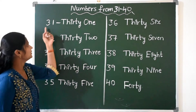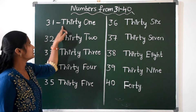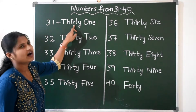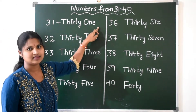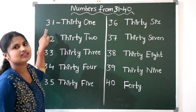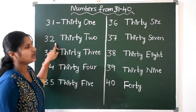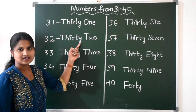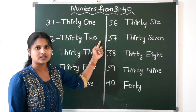Now let us see 31. What is the spelling of 31? T-H-I-R-T-Y, THIRTY, O-N-E, 1. Next, after 31 is 32. T-H-I-R-T-Y, THIRTY, T-W-O, 2. 32.